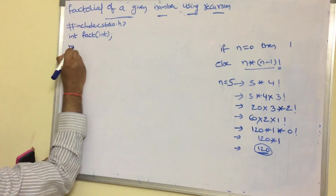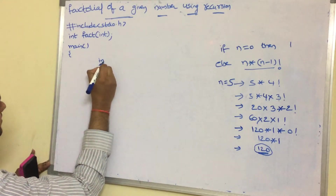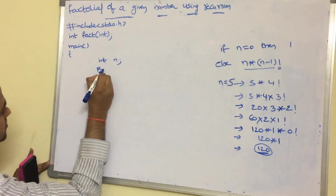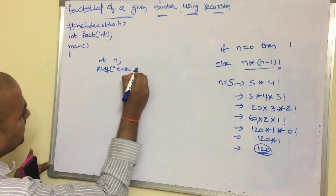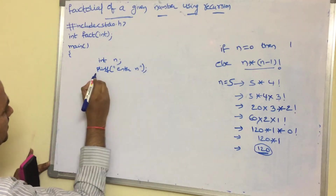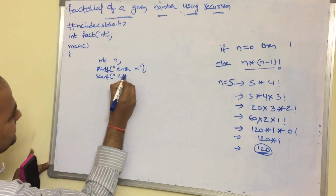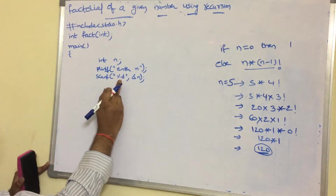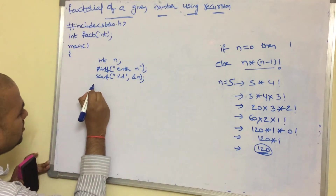Execution starts from the main function. Let us declare the variable: int n. Now read the n value: printf("Enter n value"). Next we read the value using scanf("%d", &n), because this is an integer value and the format specifier for integer is %d.